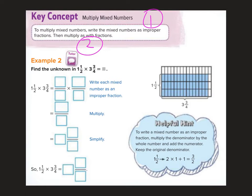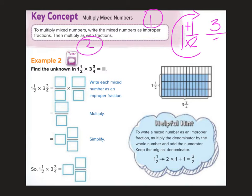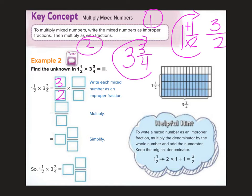Remember my little trick. So if I have one and one-half, we need to circle up and multiply. Two times one is two, plus one is three over two. So I'm going to be multiplying three over two, and then I need to circle up my three and three-fourths. Four times three is twelve, plus three more is fifteen-fourths.